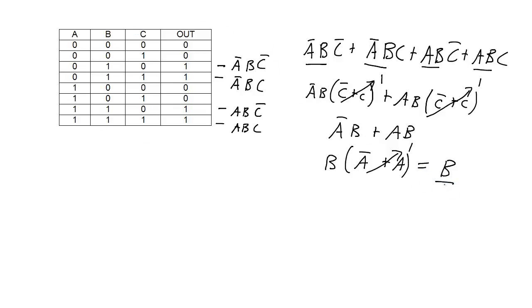A Karno Map is similar to a truth table in that it has an entry in the table for every possible input. But while the truth table list of entries is sequential — 0, 0, 0 up to 1, 1, 1 — the K-map is written so that the input combination for each box only changes by one bit when moving up, down, left, or right.